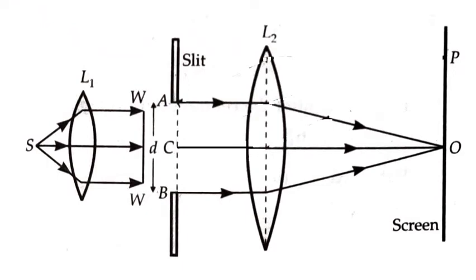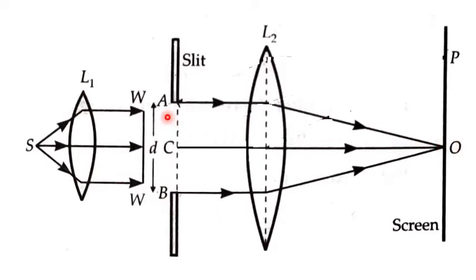Suppose you have a source of light producing light in all directions. Using a convex lens, we will focus the light onto a slit — a small gap of width W. When the light goes through the slit, we will use another convex lens to focus it on the screen.